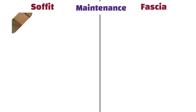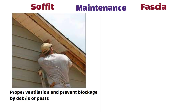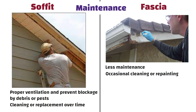Maintenance: Soffit may require periodic maintenance to ensure proper ventilation and prevent blockage by debris or pests. It may need cleaning or replacement over time. Whereas fascia generally requires less maintenance. It may need occasional cleaning or repainting to maintain its appearance and protect it from weathering.